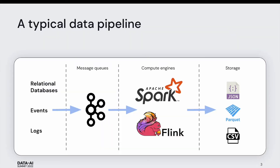Before I dive into the technical details of ROAPI, I'd like to give a quick overview of exactly what kind of problem I want ROAPI to solve. This is a very typical data pipeline I'm sure all of you are familiar with. On the left side, we have data from relational databases, events from the client, and logs from different services. All of this data gets sent to a distributed message queue, where compute engines consume and transform these messages, compacting them into efficient file formats, typically Parquet, and storing them as objects in highly available object stores.